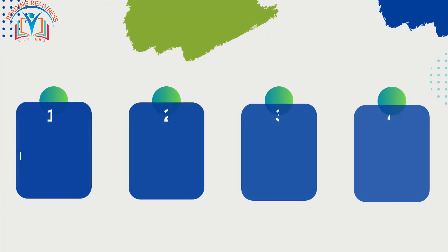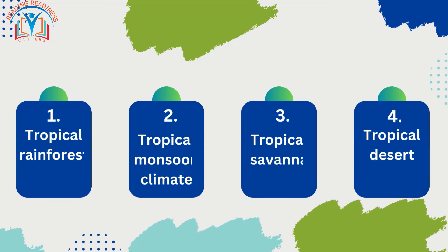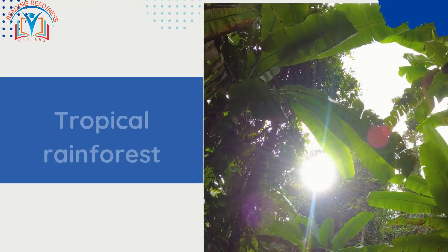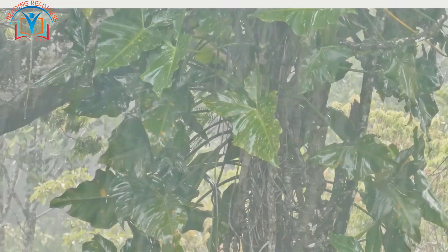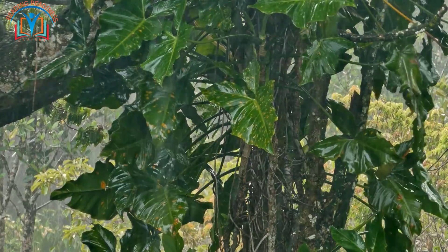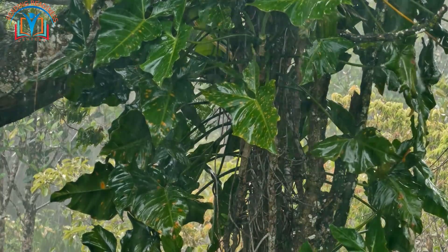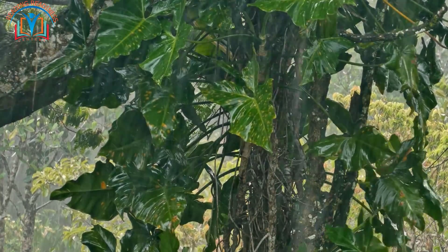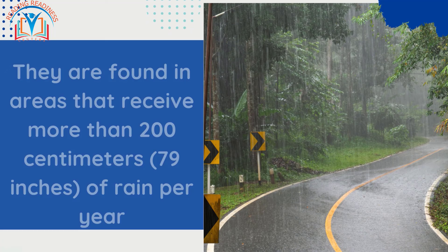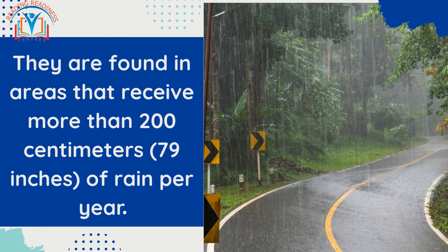The four types are: tropical rainforest, tropical monsoon climate, tropical savannah, and tropical desert. Tropical rainforests are characterized by their dense vegetation and high rainfall. They are found in areas that receive more than 200 centimeters — 79 inches — of rain per year.